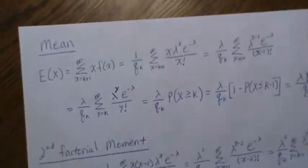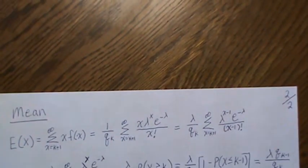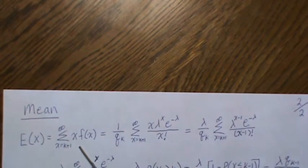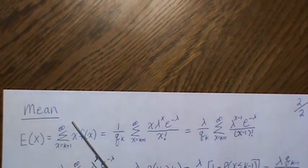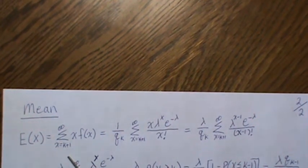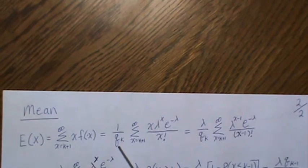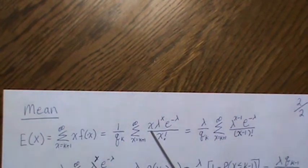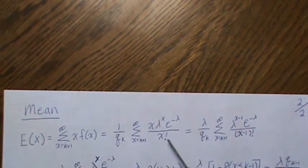Dividing by q sub k gives one, confirming it's a valid PDF. Now let's look at the mean: it's the expected value, the sum of x times the probability mass function over all possible values. We bring out the 1/q_k factor since it has no index, and then compute x times the Poisson PMF.